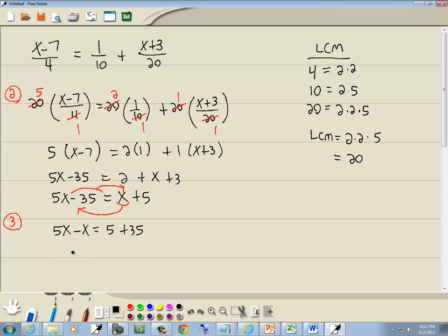5x minus 1x gives us 4x. And combine together numbers, 5 plus 35 gives us 40.